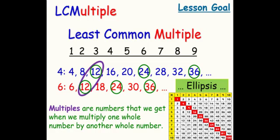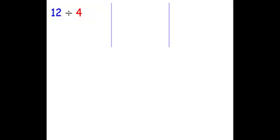Multiples are numbers that we get when we multiply one whole number by another whole number. When we think of multiples, we should think of multiplication. Another way of writing 12 divided by 4 is like so.